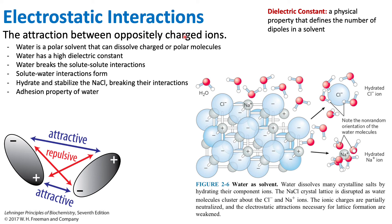We have to keep in mind that electrostatic interactions are different from hydrogen bonding. Hydrogen bonding is between two partial charges — a partial positive and a partial negative. Electrostatic interactions are more in relation to fully charged ions that are dissolved in water, like NaCl, particles dissociating into their ions.